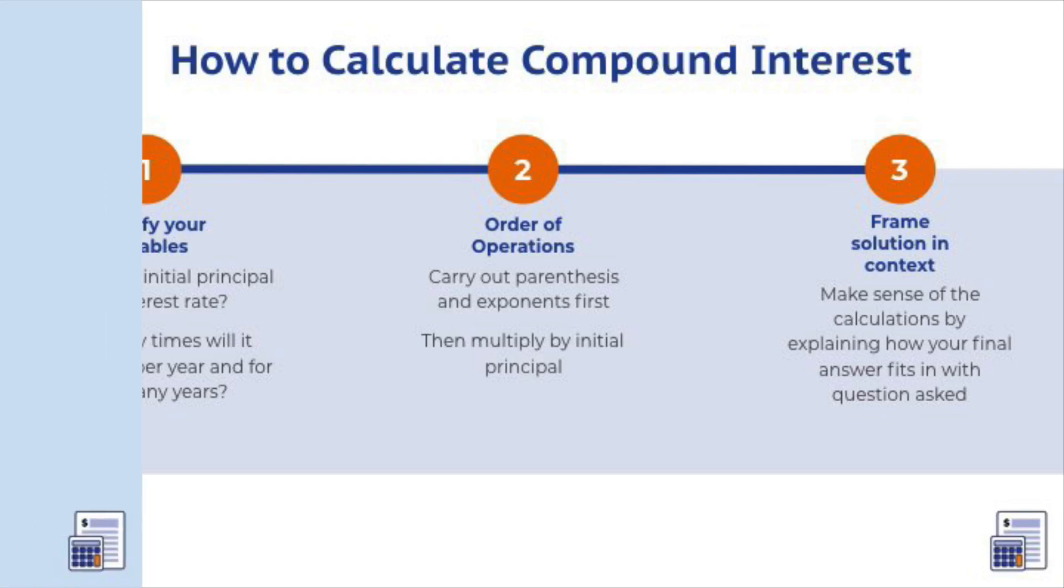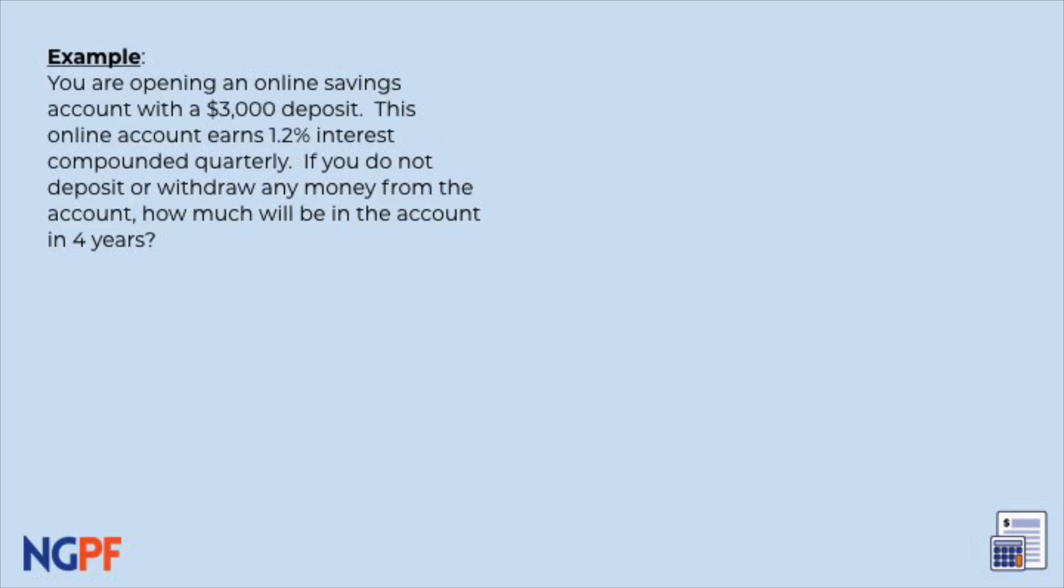Now it's your turn. You're opening an online savings account with a $3,000 deposit. This online account earns 1.2% interest compounded quarterly. If you do not deposit or withdraw any money from the account, how much will be in the account in 4 years?